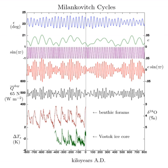When the Earth's apsides are aligned with the equinoxes, the length of spring and summer combined will equal that of autumn and winter. When they are aligned with the solstices, the difference in the length of these seasons will be greatest.